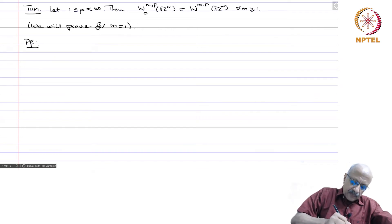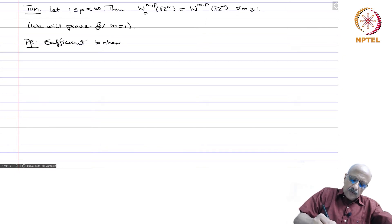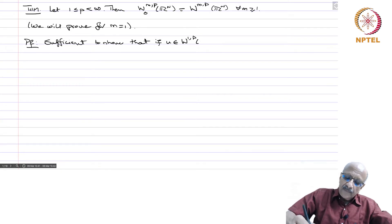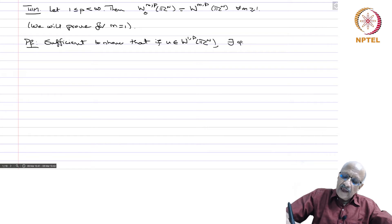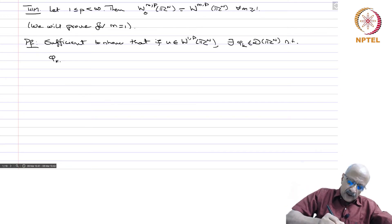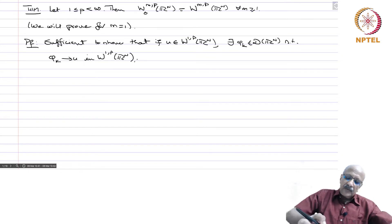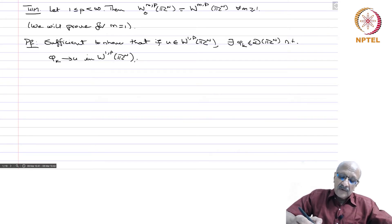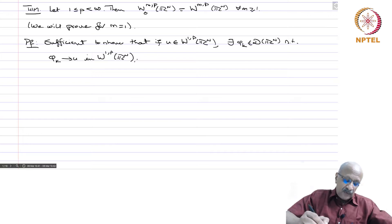Proof: It is sufficient to show that if u belongs to W^{1,p}(ℝⁿ), there exists φ_k in D(ℝⁿ) such that φ_k converges to u in W^{1,p}(ℝⁿ). This is the idea because W^{m,p}_0 is the closure of D(ℝⁿ), and therefore it is enough to show that every element in W^{1,p}(ℝⁿ) can be approximated. This shows that W^{1,p} is contained in W^{m,p}_0; the reverse inclusion is always there and therefore we have proved equality.